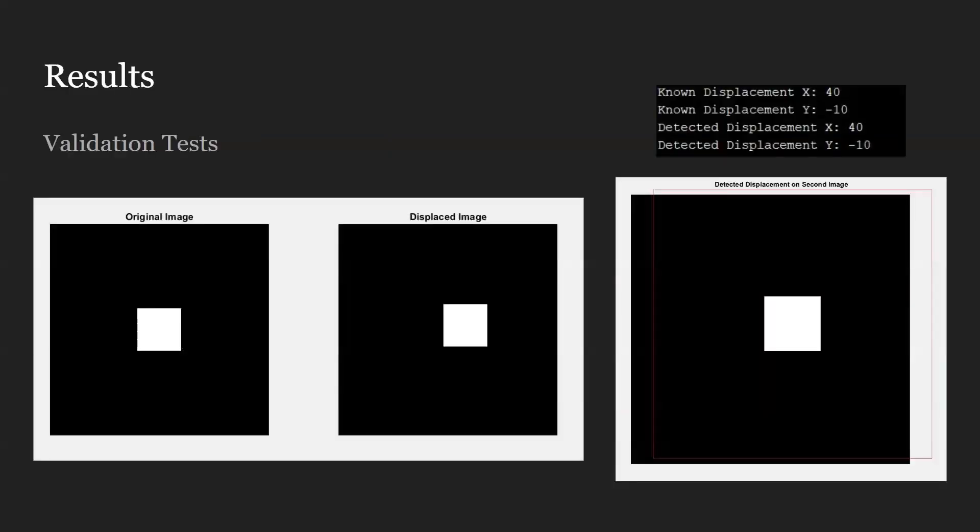To get started, we needed to do some validation tests, because we need to make sure that the way we're calculating the displacements is correct. We put in a known displacement, then calculate what the detected displacement is. If it's the same thing, then we know it's correct. We tested it with the validation, and it passed the test.